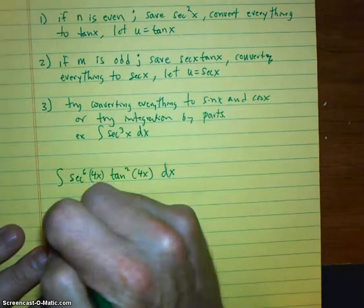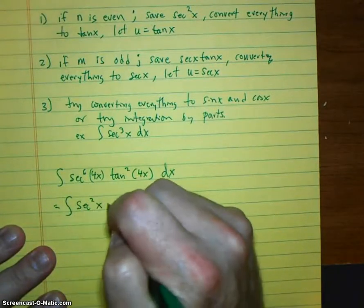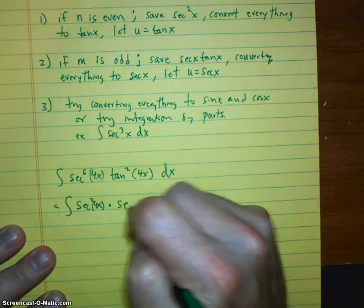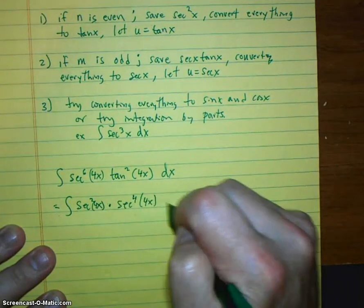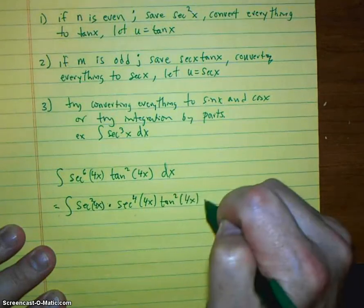So I'm going to take this integral. And I'm going to save a secant squared. Of 4x. And then, left over, I would have secant to the fourth of 4x. Tangent squared of 4x dx.